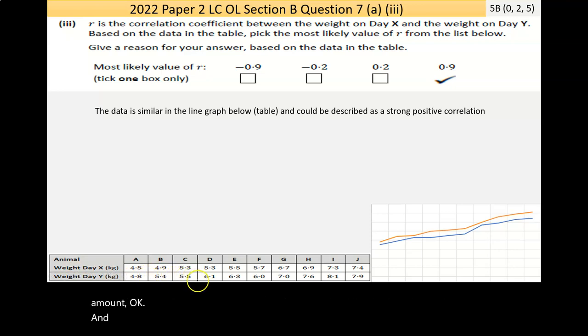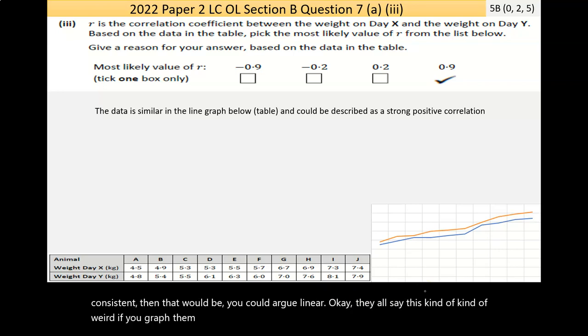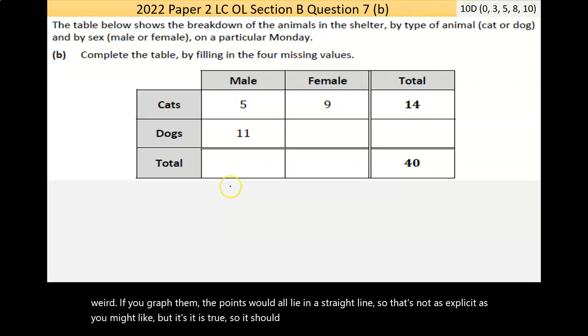It's not going to be perfectly linear, but if that amount that they change by each time is consistent, then that would be, you could argue, linear. They also say, this is kind of weird, if you graph them, the points would all lie in a straight line. So that's not as explicit as you might like, but it is true. So it should achieve the max. Now, the next one here, part B, says the table below shows the breakdowns of the animals in the shelter by type of animal, cat or dog, and by sex, male or female, on a particular Monday.